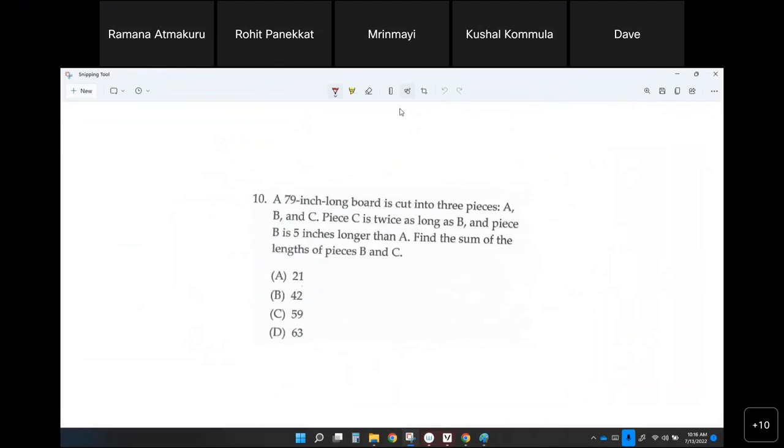A 79 inch long board is cut into three pieces. That means length of piece A, length of piece B, length of piece C. If you add all of them, that should be equal to 79 inches, right? Do you all agree with that equation? Yes. Okay.